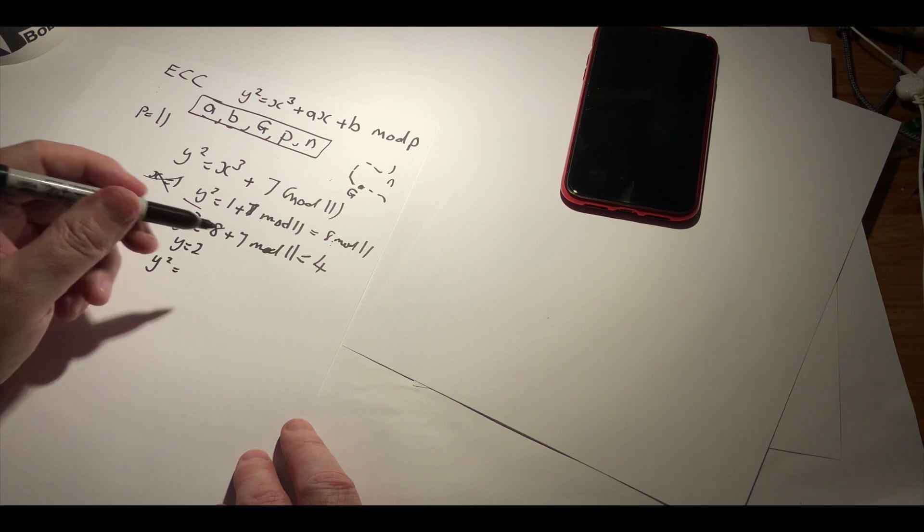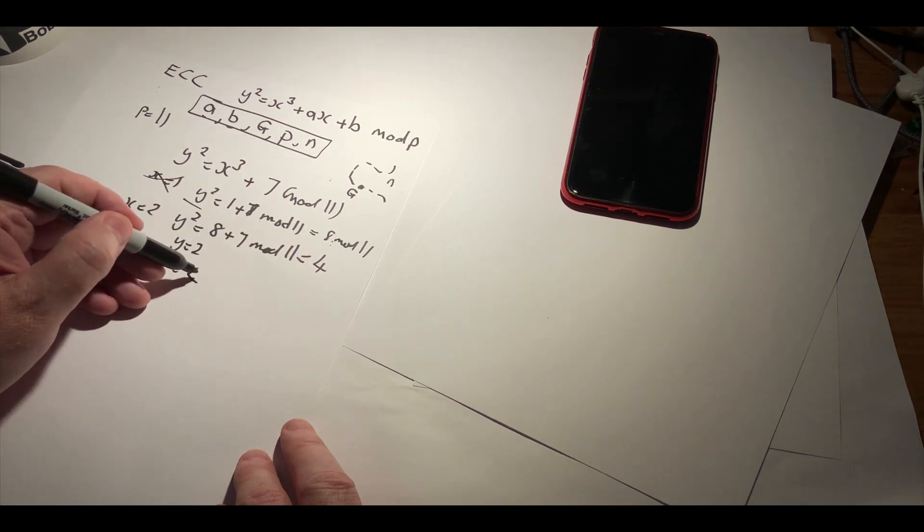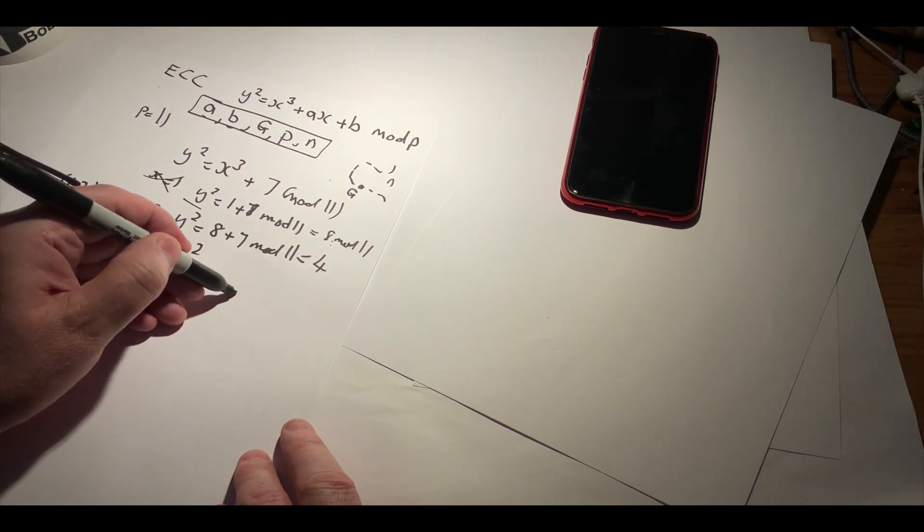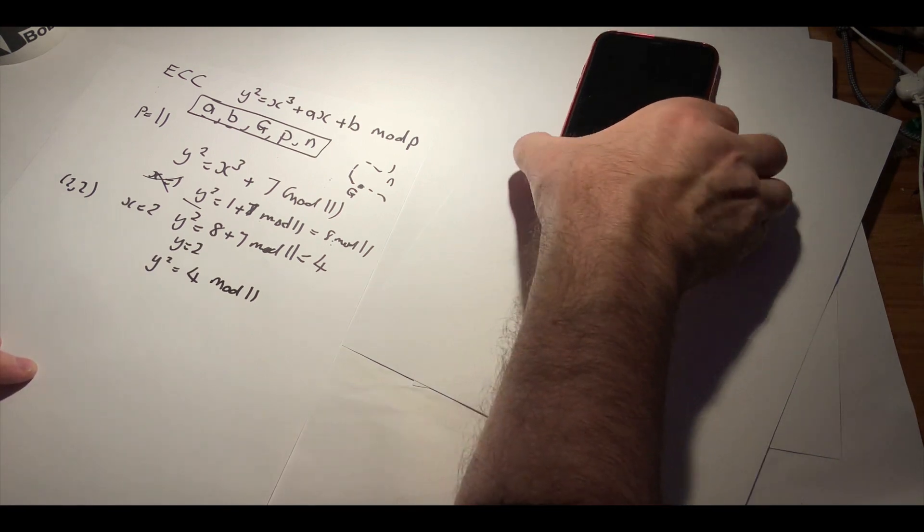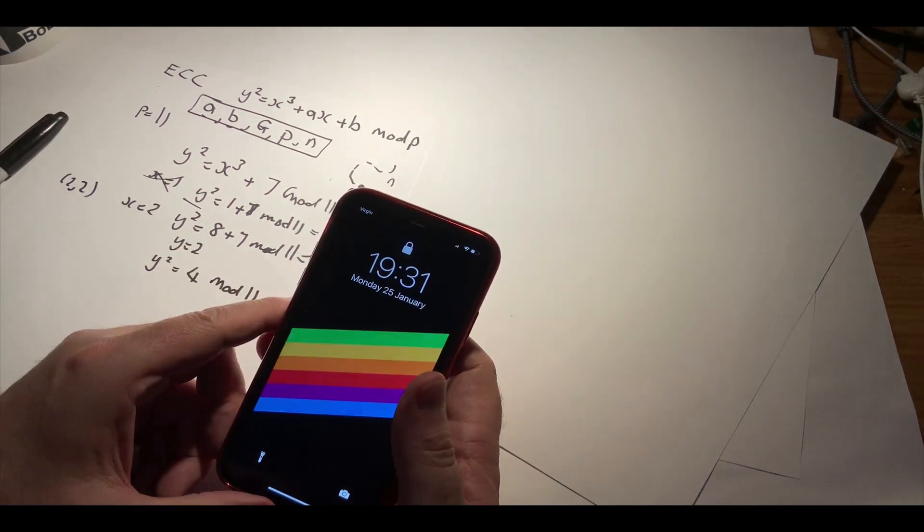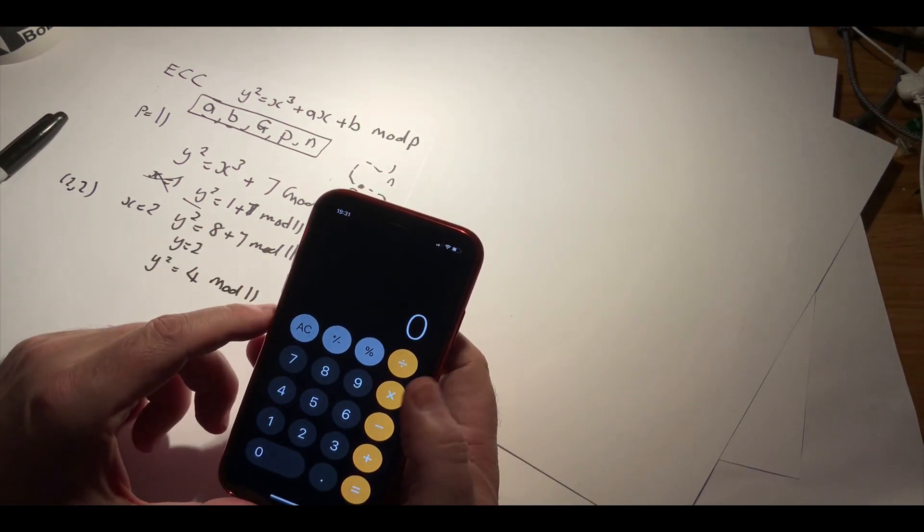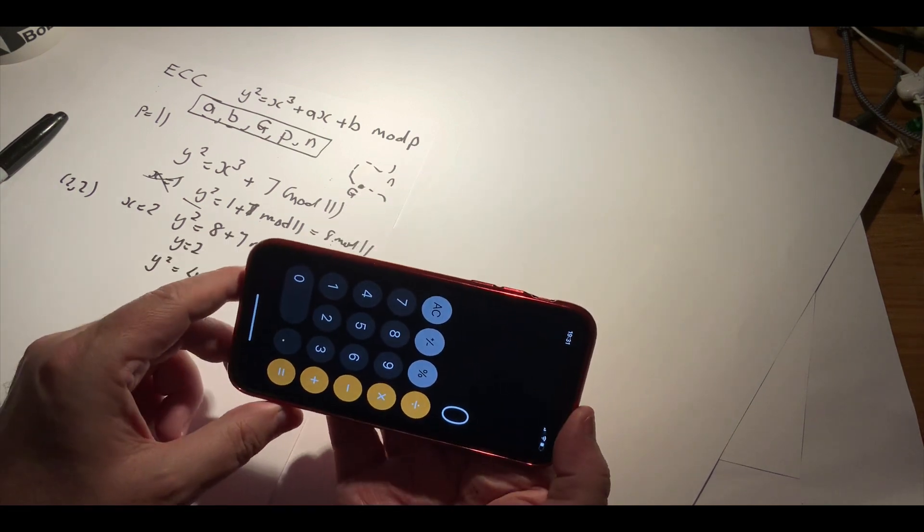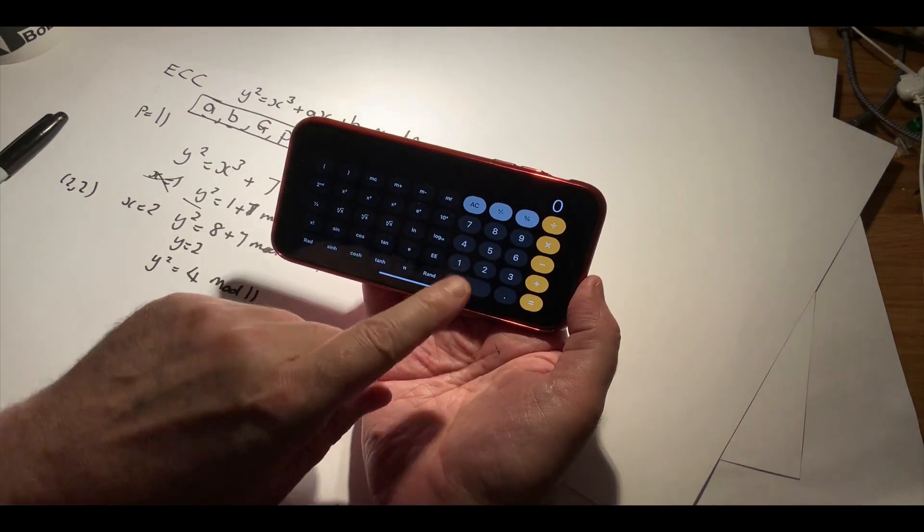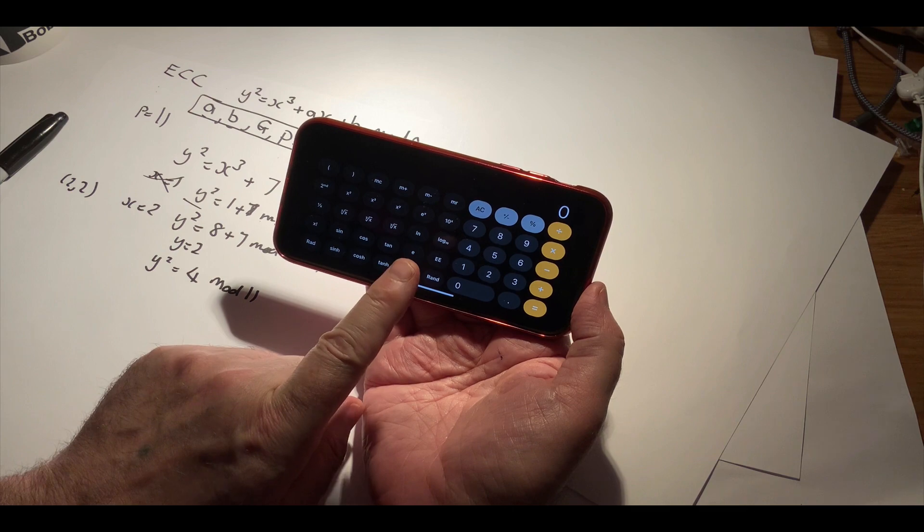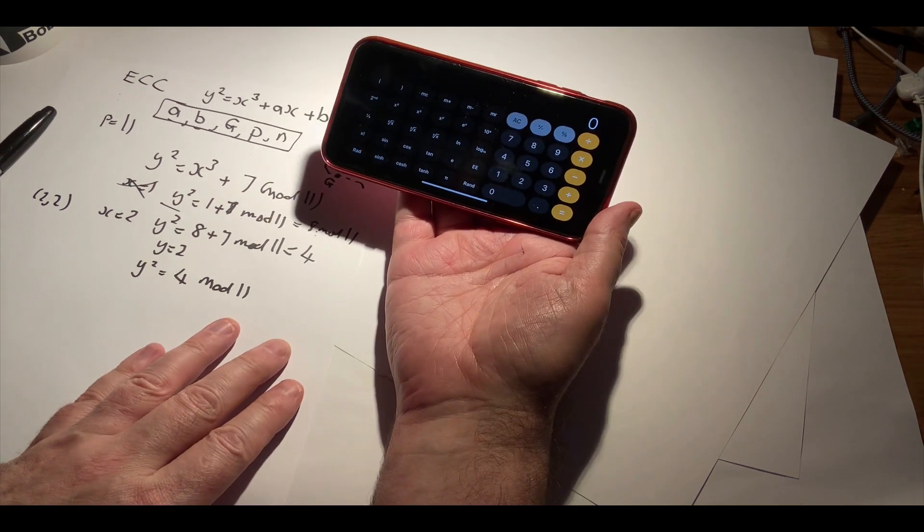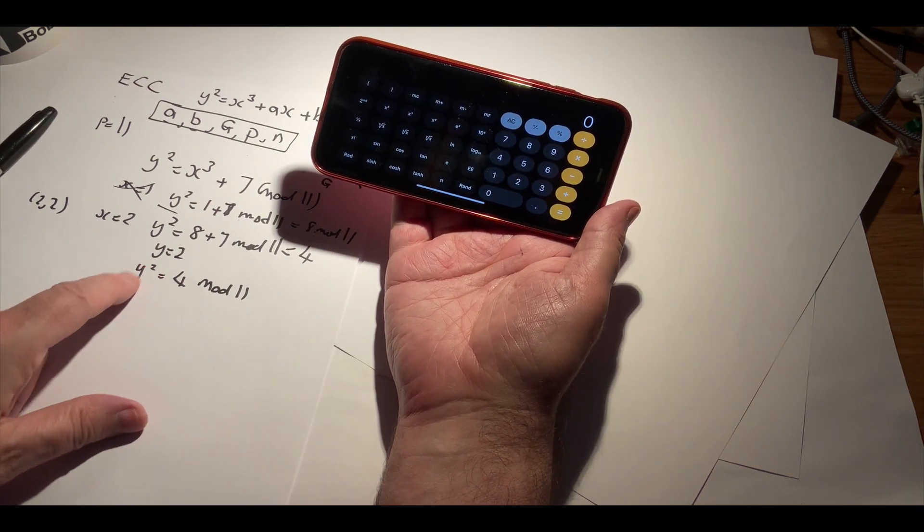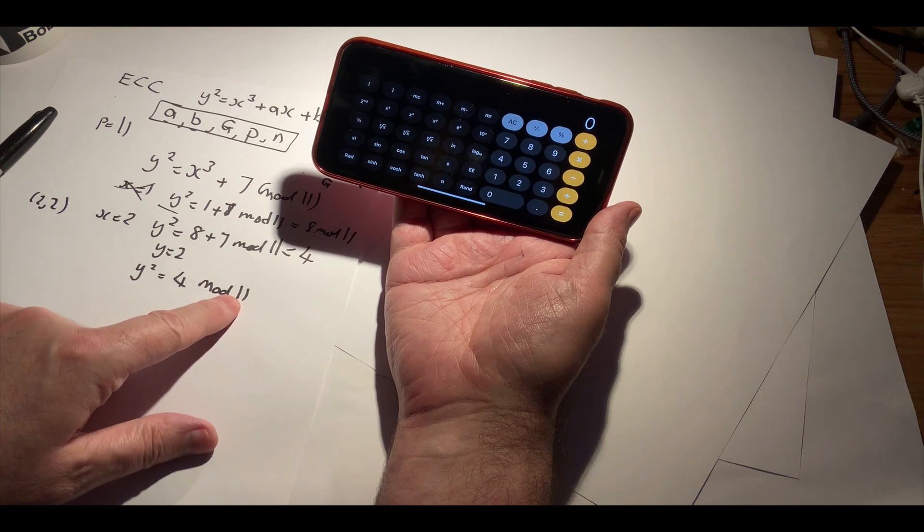Y squared equal to 4 mod 11. So what we want is a value when we square it and we take mod 11, it's going to give us 4, and I just so happen to know that that value is 9.